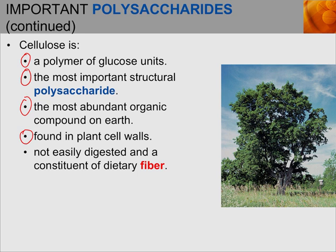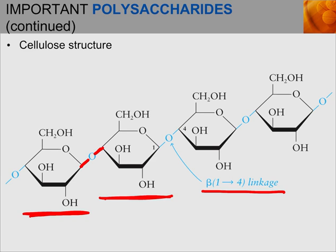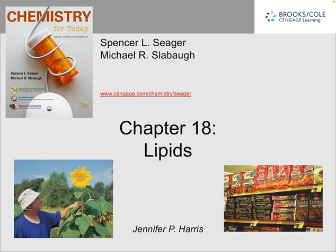Cellulose is not easily digested, but it is a constituent of dietary fiber. Its structure uses a beta-1,4 glycosidic linkage instead of an alpha-1,4 linkage — a subtle difference that results in a completely different polysaccharide. That's it for carbohydrates. Next time we're going to talk about lipids, and remember we're joining together chapter 17 and chapter 18 as part of this week's content.